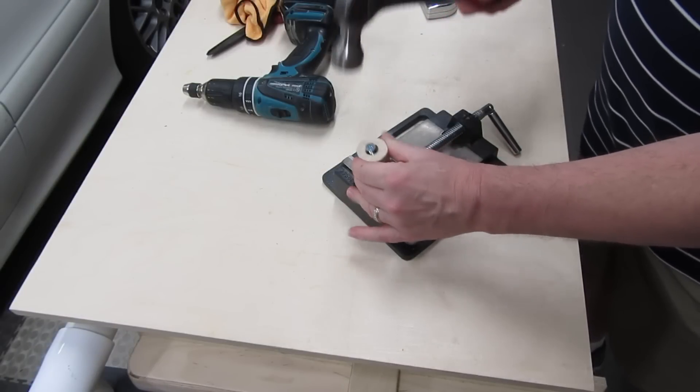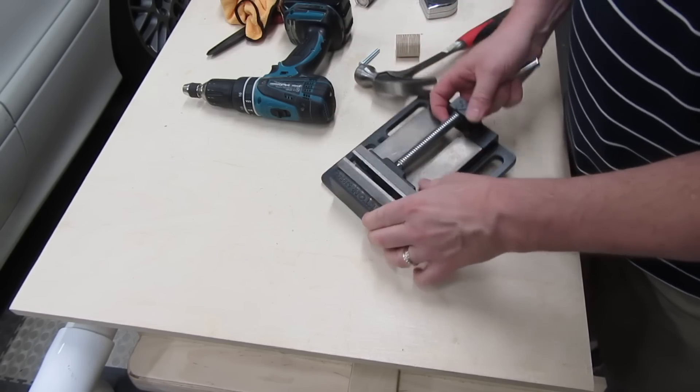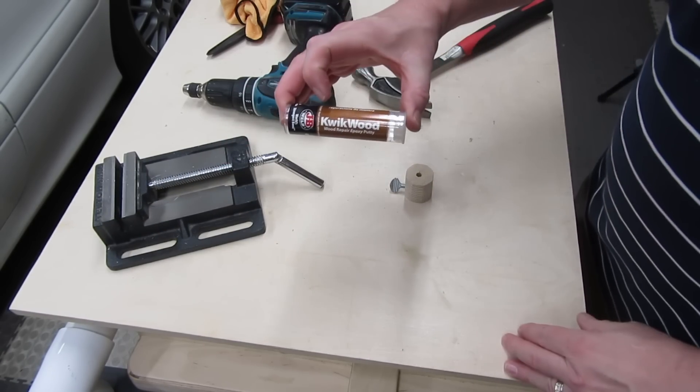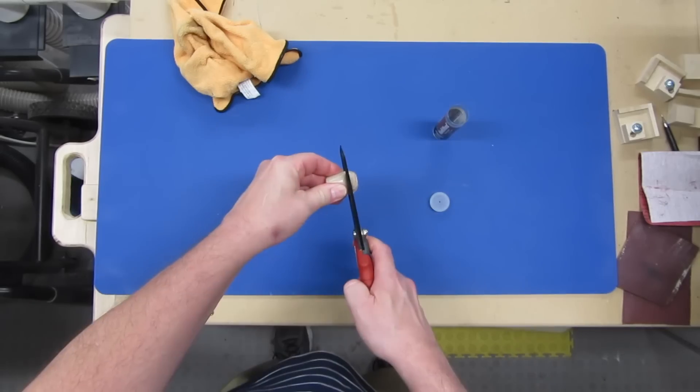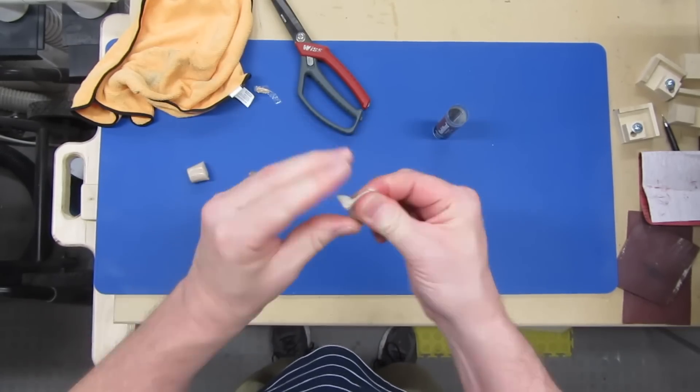Here's how we fixed this. I took the hex shaft out of the adapter by pounding a screw into the hole from the other side. Then I used some JB Weld Quickwood Putty to fill the hole. You cut off a section and it's two colors, so you knead it until the colors blend together.